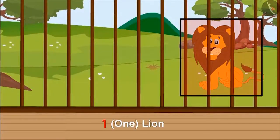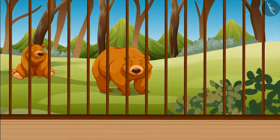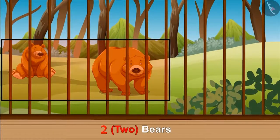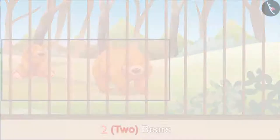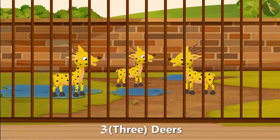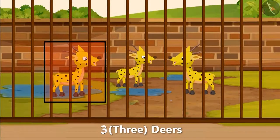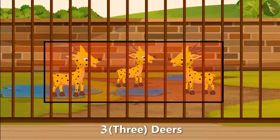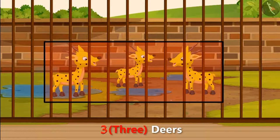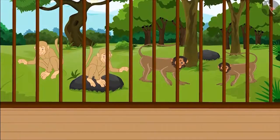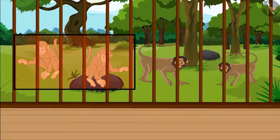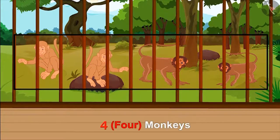There is a lion in that paddock. There are 1 and 2 — 2 bears in that one. The paddock next to it has 1, 2 and 3 — 3 deer. And there are 1, 2, 3 and 4 — 4 monkeys in that paddock.